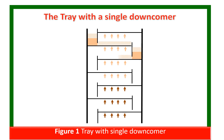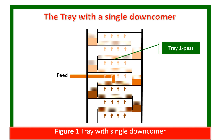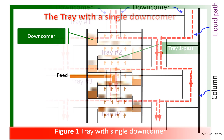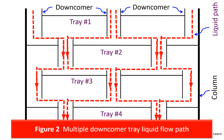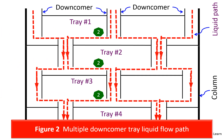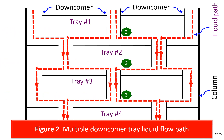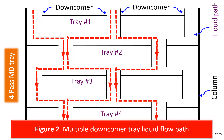This figure illustrates a tray with a single downcomer. This figure illustrates a multi-pass tray. Can you guess how many passes are there in the tray? Yes, there are four passes. It is a four-pass multi-downcomer tray.